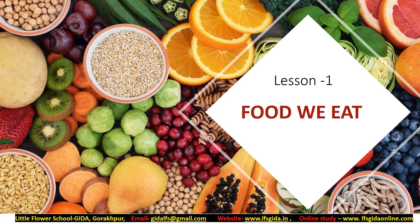Wishing a wonderful day to all of you. Welcome to the online class of SST. Today we will read Chapter 1: Food We Eat. I think everyone is familiar with food. Food is what people and animals eat to survive. Food usually comes from animals and plants. In this lesson, we are going to learn about what is food, why we need food, types of meals, and good eating habits.